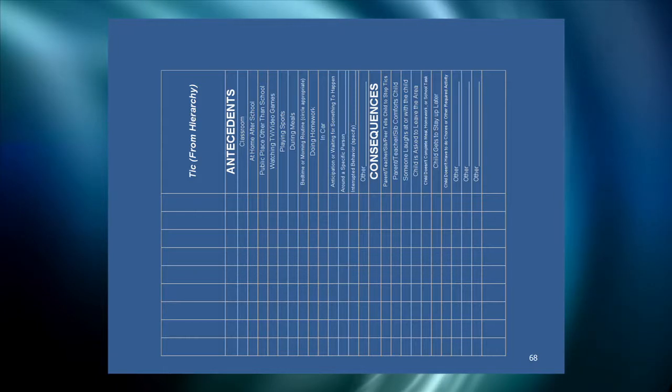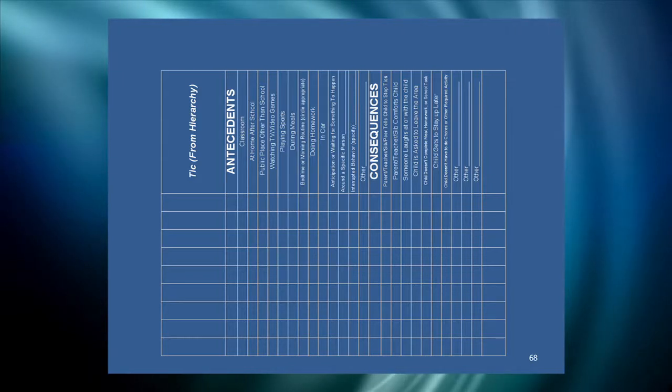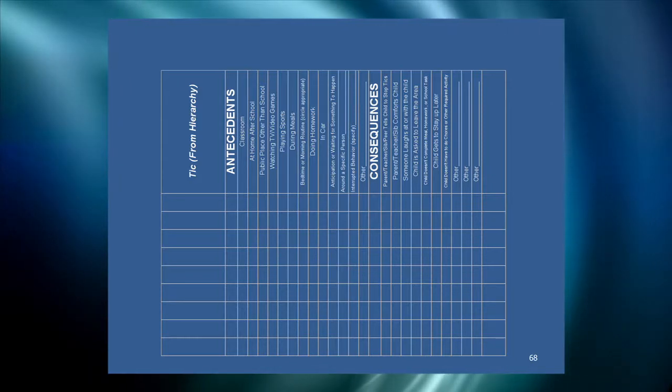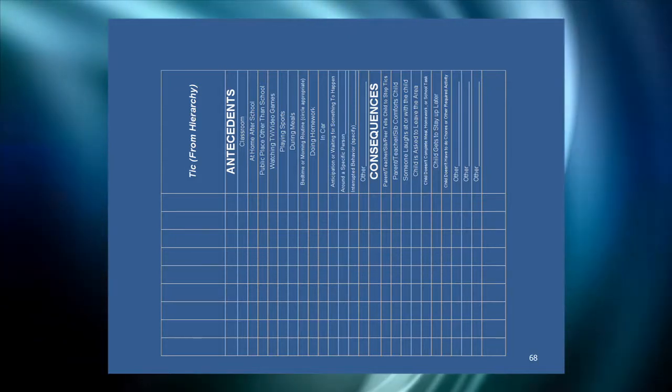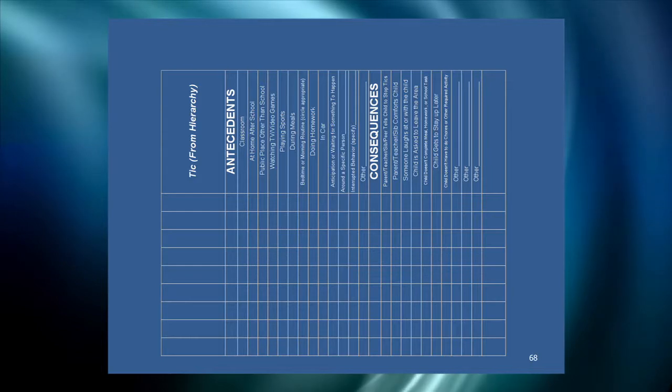We have a form to help facilitate the interview. Across the top we have antecedents and consequences. These antecedents are different antecedents that are commonly found to influence tic frequency. But keep in mind, these are just like markers. If somebody endorses classroom as an antecedent that triggers their tics, that's just a note to you as a clinician to go in and ask more detail about that situation. It's not meant to be a broad, 'all classrooms make tics worse.' You need to understand the whole context of the situation.